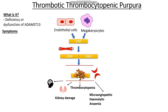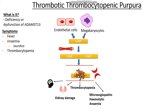The first of these is a fever, and this is due to the neurological dysfunction that occurs and the changes going on in the brain. The second thing that occurs is an anemia, and remember this is a type of hemolytic anemia, so our patient might actually be yellow or jaundiced. The third thing that happens is a thrombocytopenia, because we're using up our platelets, so therefore we might see symptoms of not clotting properly, things like bruising, bleeding and nosebleeds.